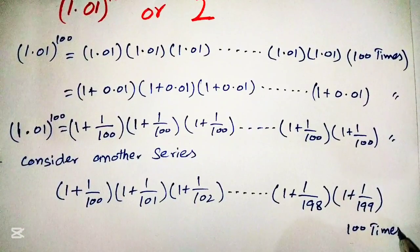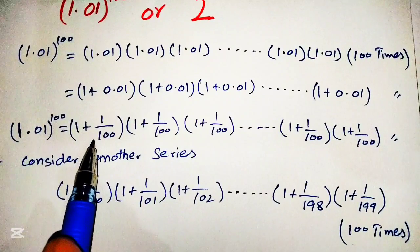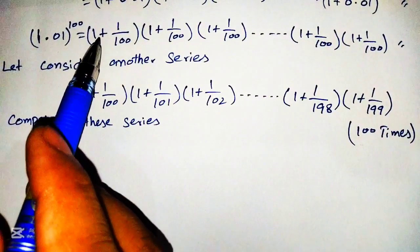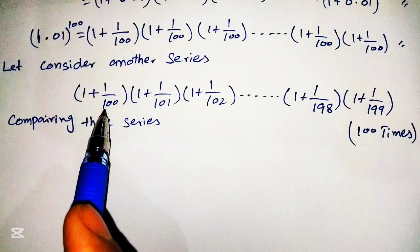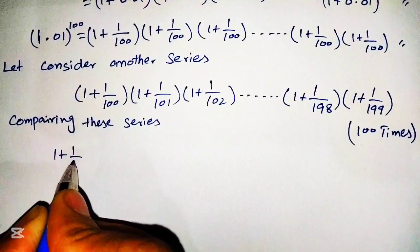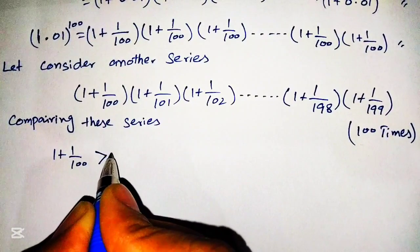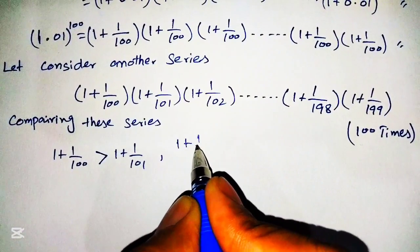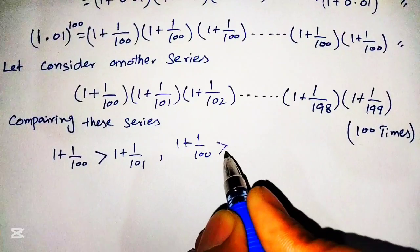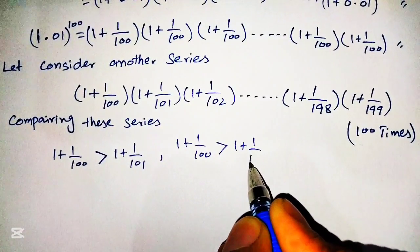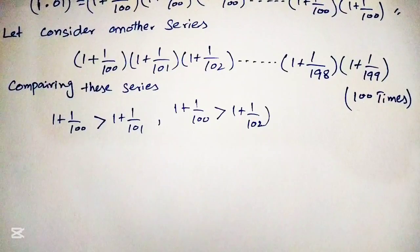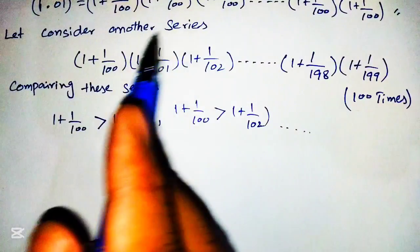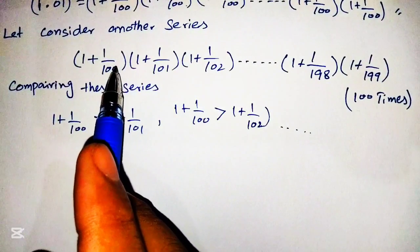We compare this new series with our original expression term by term. The first terms are equal: (1 + 1/100). The second term: (1 + 1/100) is greater than (1 + 1/101). The third term: (1 + 1/100) is greater than (1 + 1/102), and so on. All terms of the original series are greater than the corresponding terms of the comparison series.